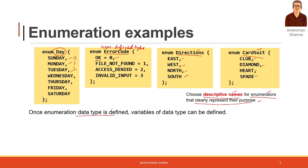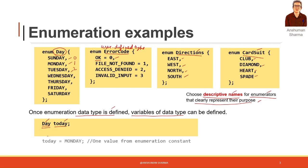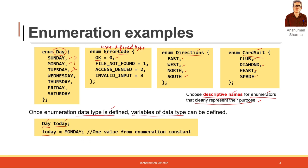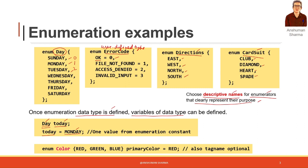Once an enumeration data type is defined, you can use variables of that data type. For example, day is the name of the data type created earlier and today is the name of the variable — today is a variable of type day. It will hold the value Monday, which indicates that today's value will be 1. You can also define the variable in a single line: write enum color followed by the enumerators and then the variable name equal to the value it will hold. The tag name is optional.